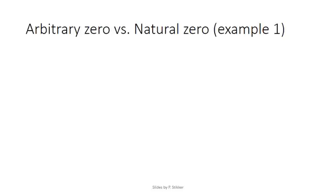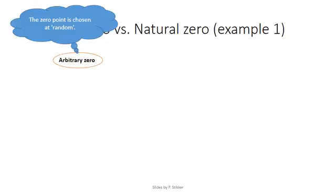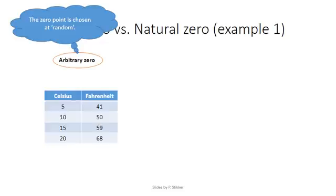What makes a variable either interval or ratio has to deal with what is known as an arbitrary zero, or does it have a natural zero? An arbitrary zero would mean that the zero point of the scale is somewhat chosen at random.